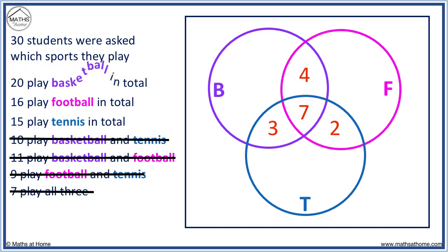20 play basketball, which means the numbers in this circle need to add to 20. We have 3 plus 7, which equals 10, plus 4 equals 14. We need 6 more people to make 20.